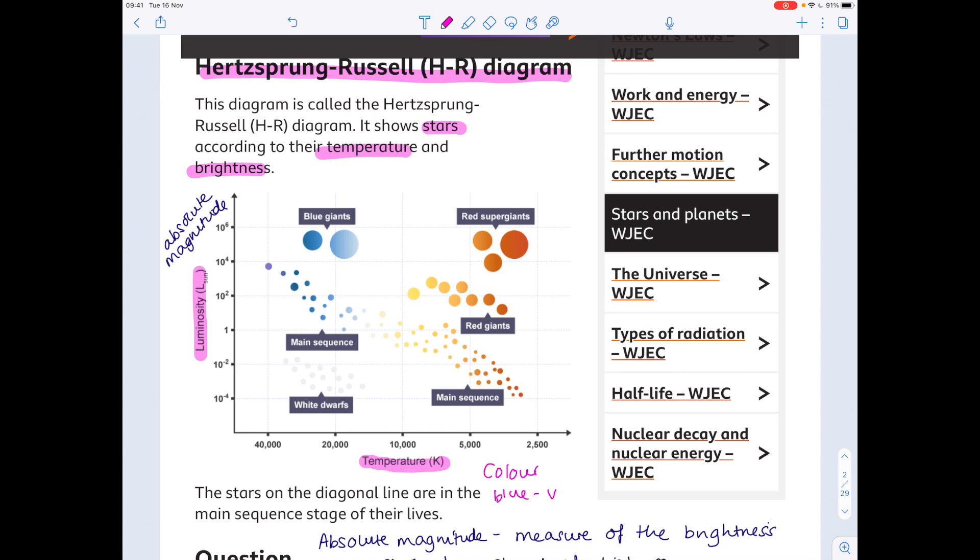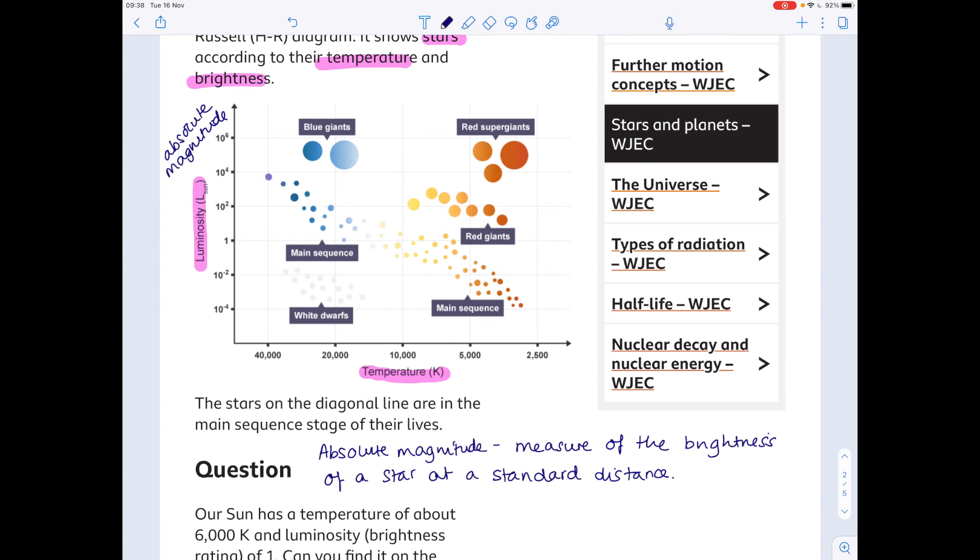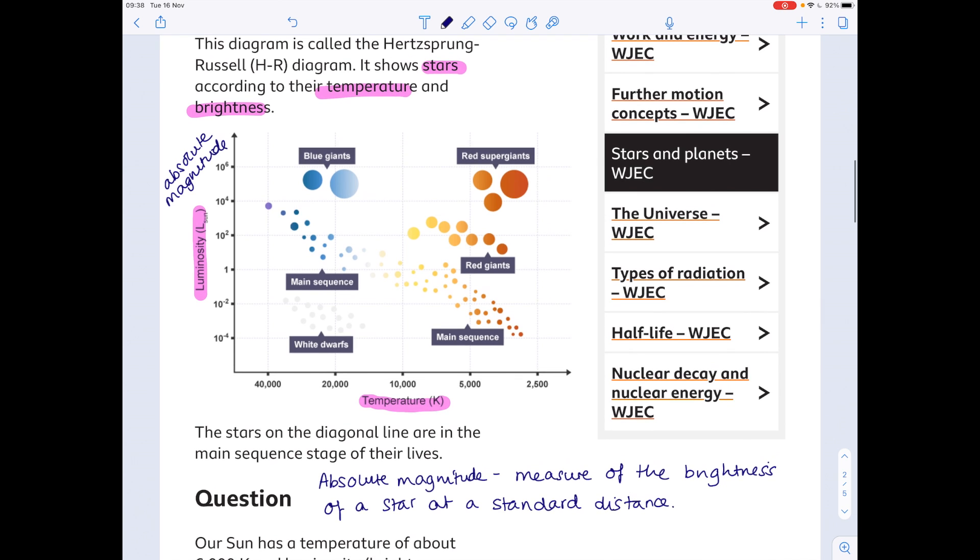So blue is surprisingly very hot. Obviously these temperatures are all very hot, but the blue is the hottest. And red, bizarrely, is the cooler star. Now with this video, the most useful thing I'm going to do is talk through the past paper questions. But let's just take a cursory look at what's going on.